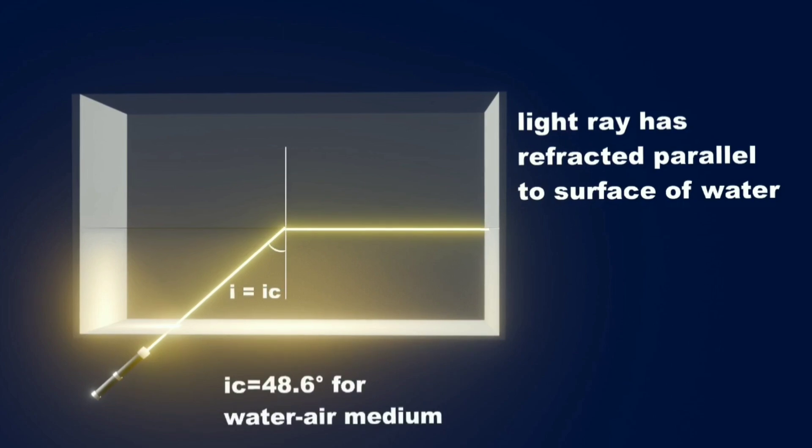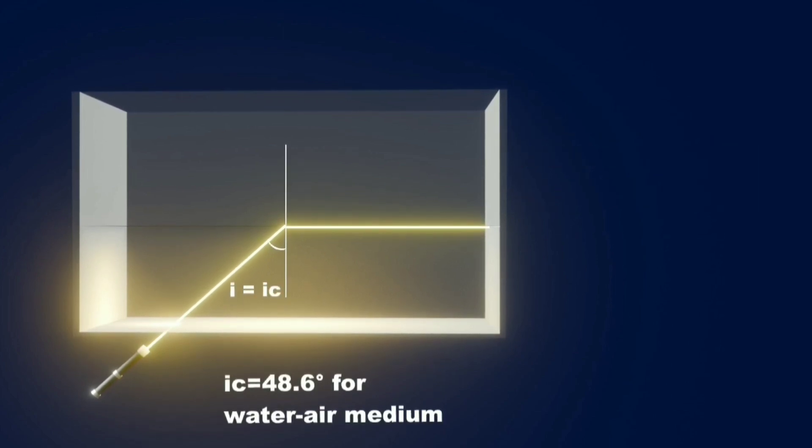At this point, the incident angle of light is called the critical angle, and the corresponding angle of refraction is 90 degrees.